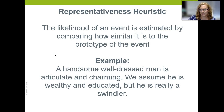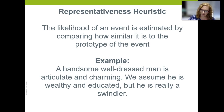Now let's think about the representativeness heuristic. The likelihood of an event is estimated by comparing how similar it is to a prototype — the best example, or best exemplar, of something. So if a handsome, well-dressed man is articulate and charming, we might assume he is wealthy and educated, because our prototype of a wealthy, educated man includes those traits. But it turns out he's really a swindler.